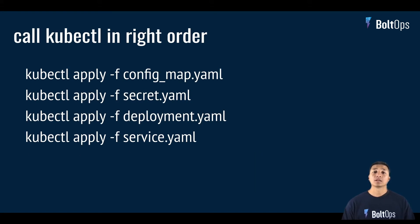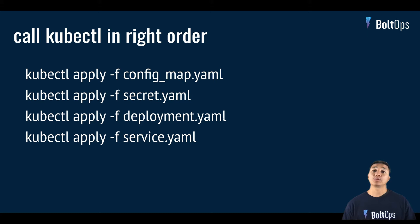If you're using kubectl directly like this, you also have to worry about the order. You have to apply the config map and the secret first, because the deployment relies on those resources — or else the deployment might say the config map doesn't exist. So you do have to worry about the right order if you're using kubectl directly.